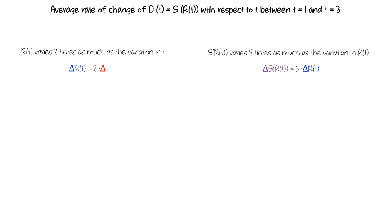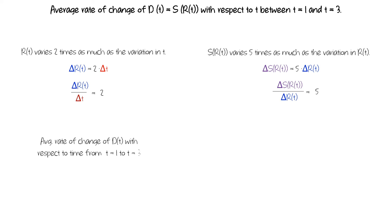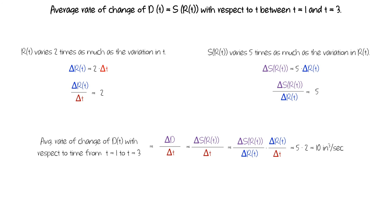Putting this all together: from the first relationship between the amounts of change in time and the amounts of change in radius, the rate of change of radius with respect to time is two. And the rate of change of sediment with respect to radius is five. Putting these together, we can determine the average rate of change of d of t with respect to time from t equals one second to t equals three seconds. This is the variation in d per amount of change in t. Since d of t is equal to s of r of t, this is the amount of change of the composite function per some amount of change in time, which is delta s of r of t per delta r of t, times delta r of t per delta t. In this scenario, this is equal to 5 times 2, or 10 cubic inches per second. And this is the second way of thinking about the rate of change of a composite function.